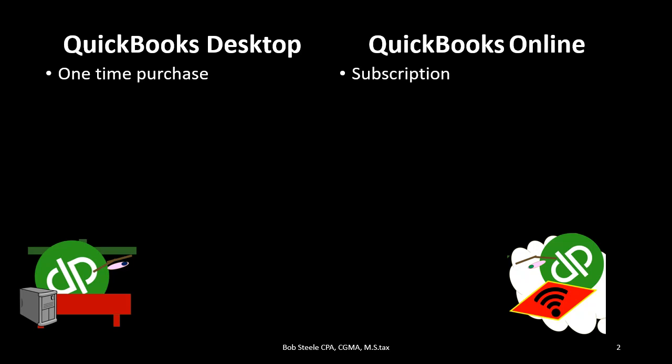Generally, the desktop version has a larger one-time fee, or you may pay in installments, but it'll be a set fee. With the online version, you make monthly payments, or you may pay a lump sum annual payment for a year of service. A good way to compare the price is to think about the annual cost for both QuickBooks Online and QuickBooks Desktop.